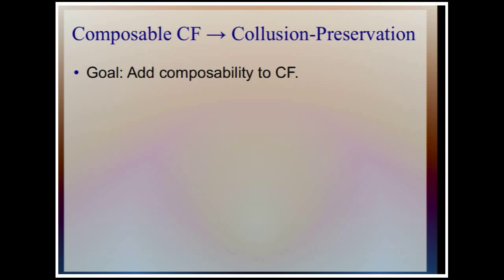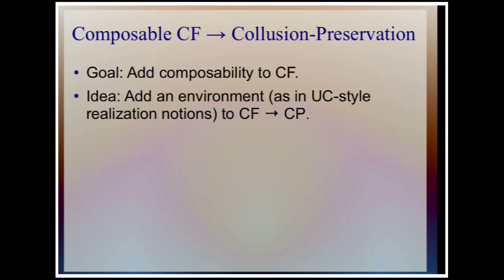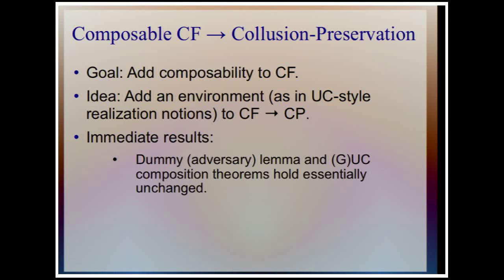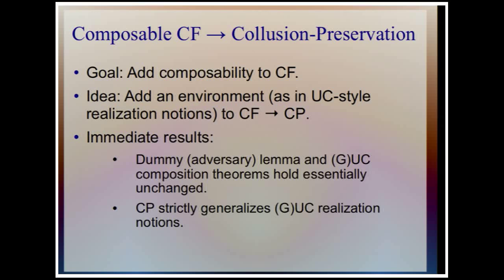Our goal is a composable version of collusion-freeness. To get composition, we do what we've learned from the UC line of works: we add an environment to our definition. The dummy-adversary lemma holds pretty much unchanged, and the composition theorem holds essentially unchanged. Moreover, this new realization notion strictly generalizes the GUC and UC realization notions, as shown more formally in the paper.